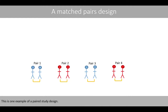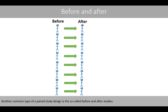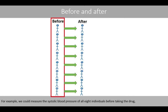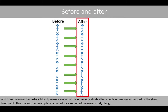This is one example of a paired study design. Another common type is the so-called before-and-after study. For example, we could measure the systolic blood pressure of all individuals before taking the drug, and then measure it again on the same individuals after a certain time since the start of drug treatment. This is another example of a paired or repeated measures study design.